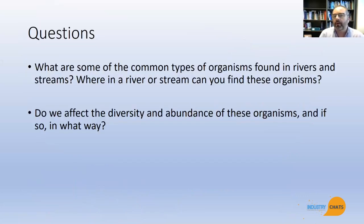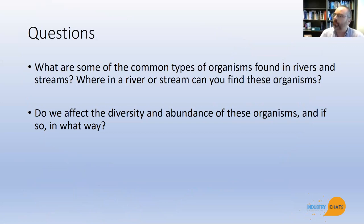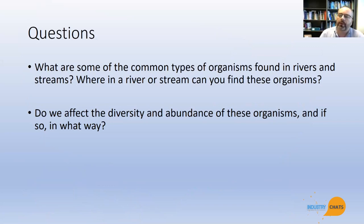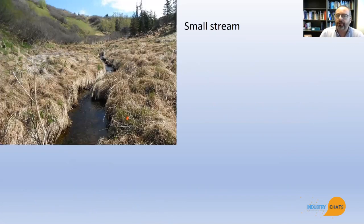Today, we're going to address a couple of questions. First, what are some of the common types of organisms found in rivers and streams, and where in a river or stream can you find these organisms? Secondly, do we affect the diversity and abundance of these organisms, and if so, in what way?